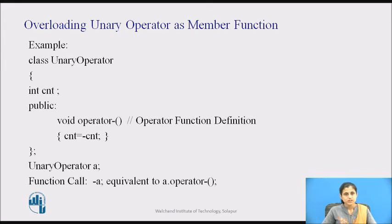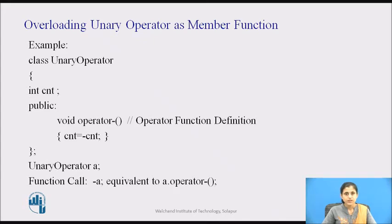Now we will discuss overloading a unary operator with a member function. A unary operator acts on one operand only. If the overloaded operator function is a member function, then it will act on the object with which it is called. The example has a class unary operator with a data member Cnt. The operator minus function negates the value of Cnt. The function can be called as -A, which is equivalent to A.operator-().